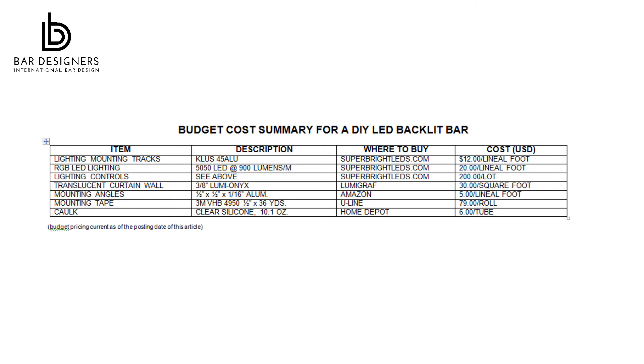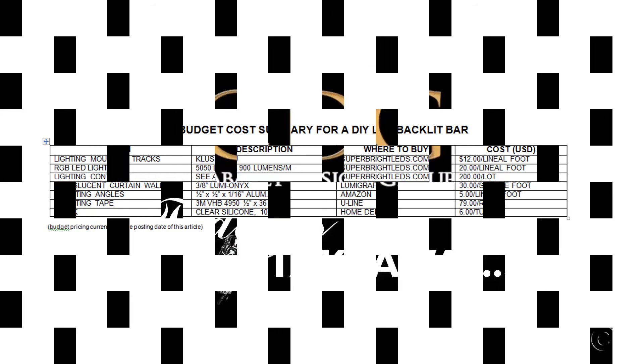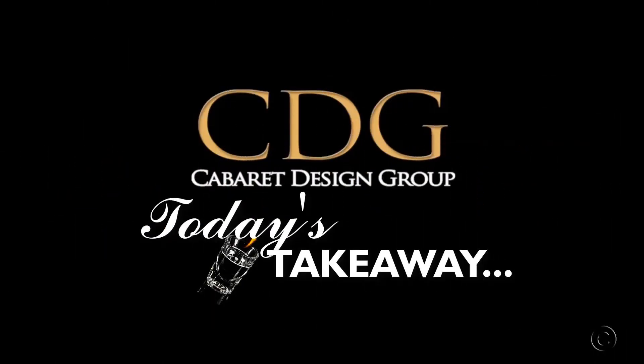So how much does it cost to build an LED backlit bar? Here's a cost summary of all the above hardware necessary to build your own backlit bar. The best RGB LED lighting for backlighting bars is a 50-50 waterproof strip with 30 SMD LEDs per meter, rated at 900 lumens and 7.2 watts.